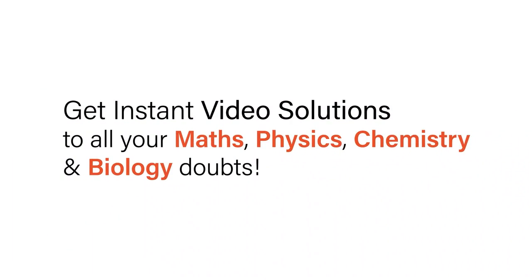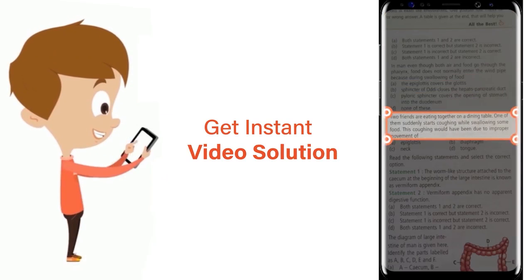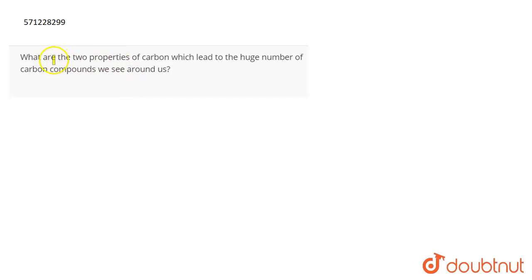With Doubtnet, get instant video solutions to all your maths, physics, chemistry, and biology doubts. Just click the image of the question, crop the question, and get instant video solution. Download Doubtnet app today. The question is, what are the properties of carbon which lead to a huge number of carbon compounds we see around us?